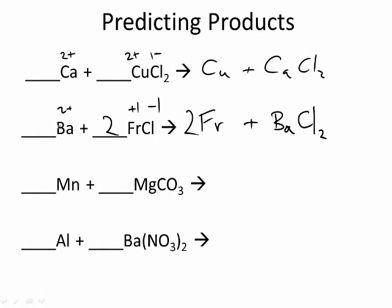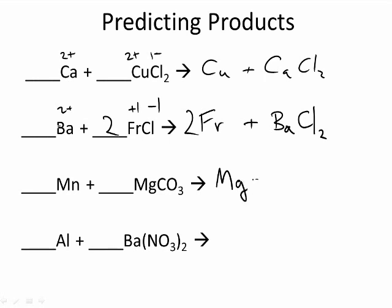Now look at this next one. Manganese is going to replace the magnesium — metal for metal. Here's an issue: manganese is a transition metal, so it can have different charges. We're going to assume it has the same charge as magnesium, or the opposite charge of carbonate, which is the same as magnesium. So we'll have magnesium by itself plus manganese carbonate. And it's all balanced.